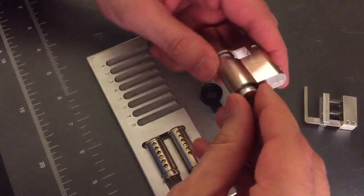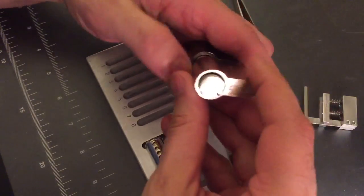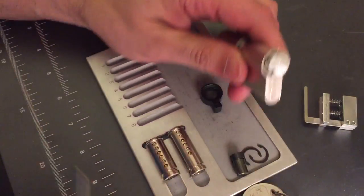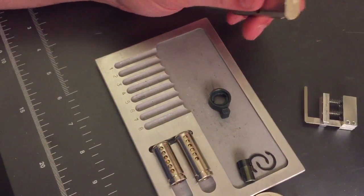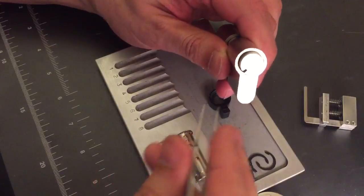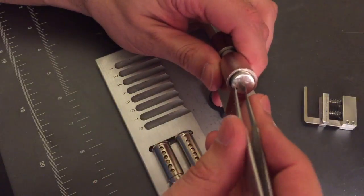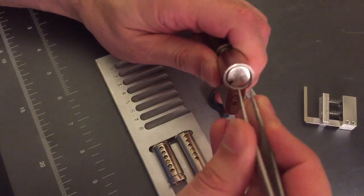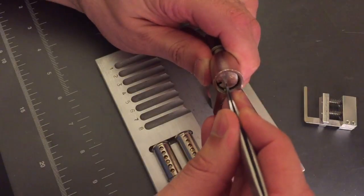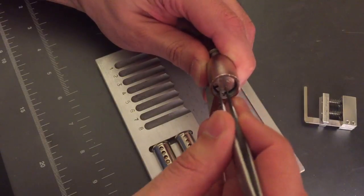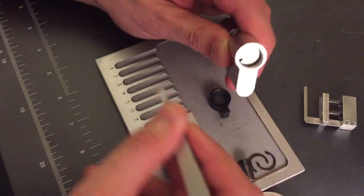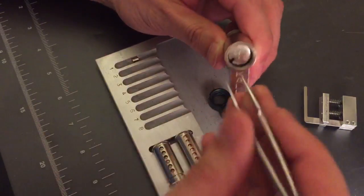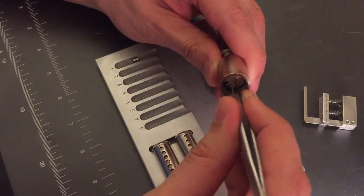We don't need this anymore. Let's start by taking the driver pins out. I felt at least two security pins—I believe in probably two and six. But let's see what we've got. Number one is a standard. Looks like that could be a steel drill pin. We'll check that in a minute.